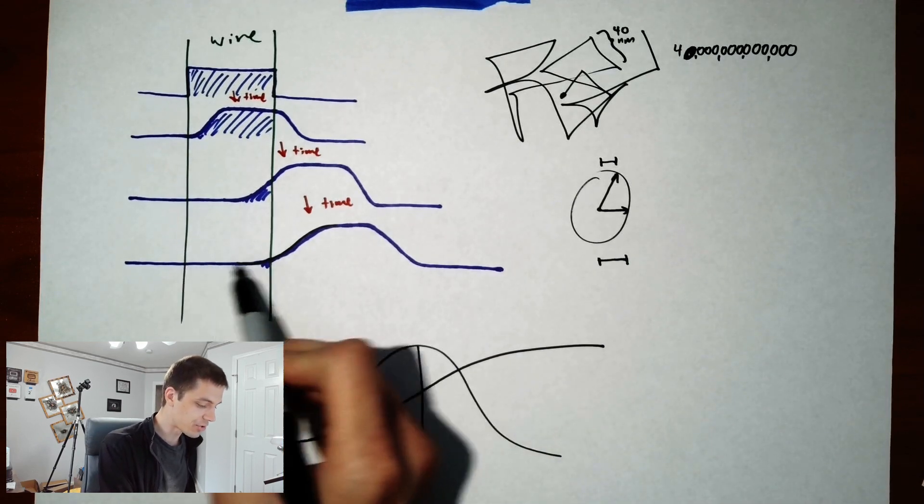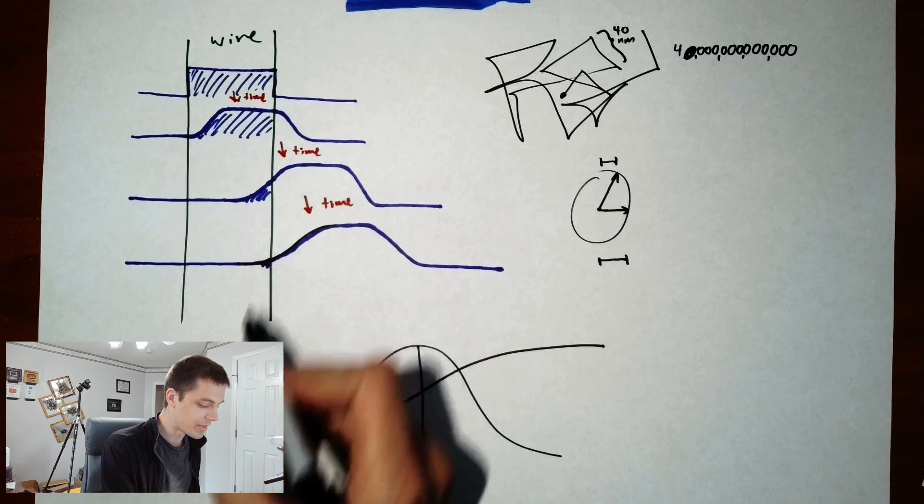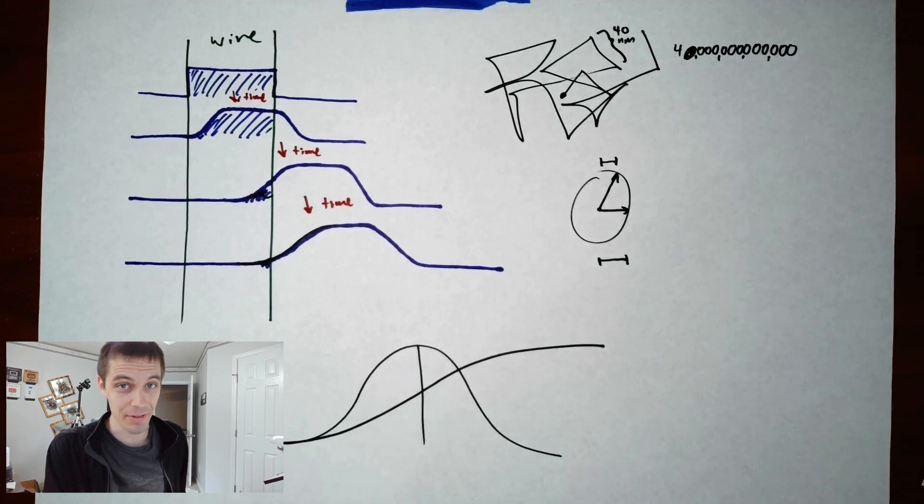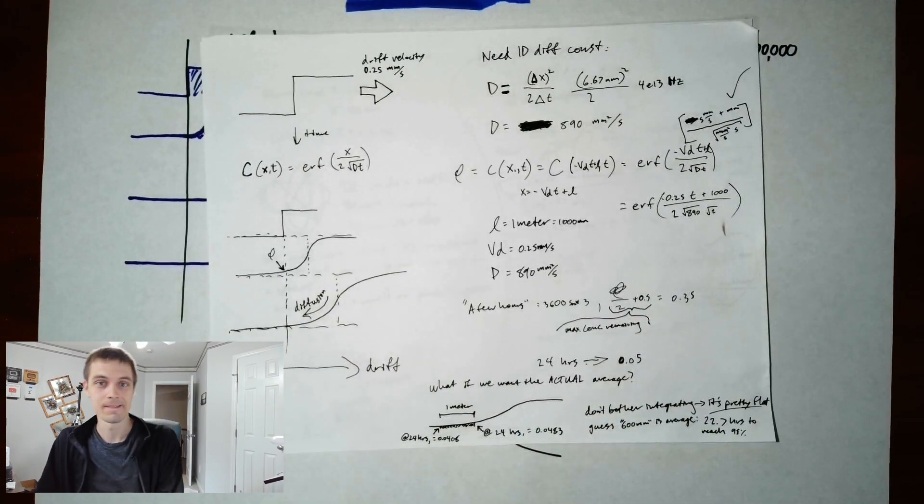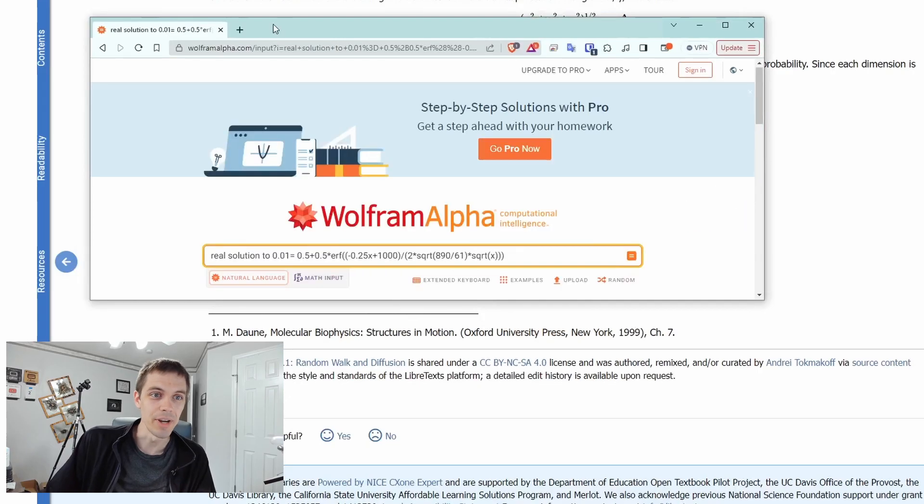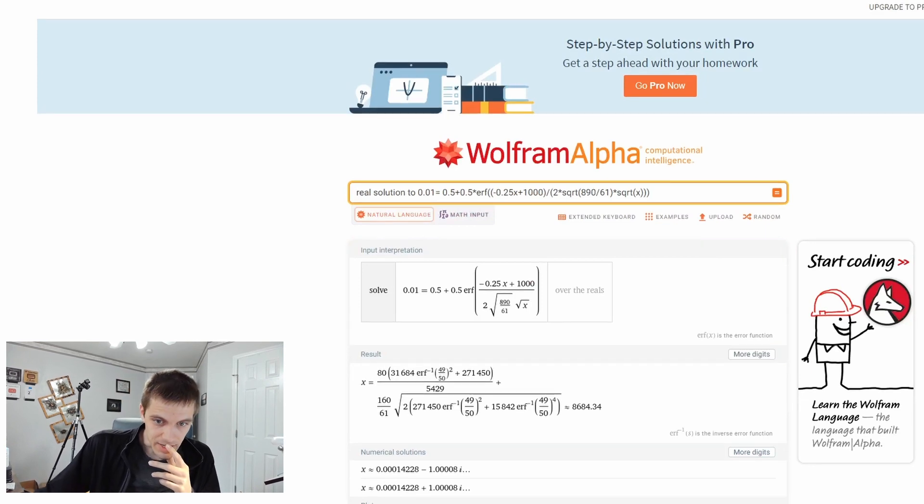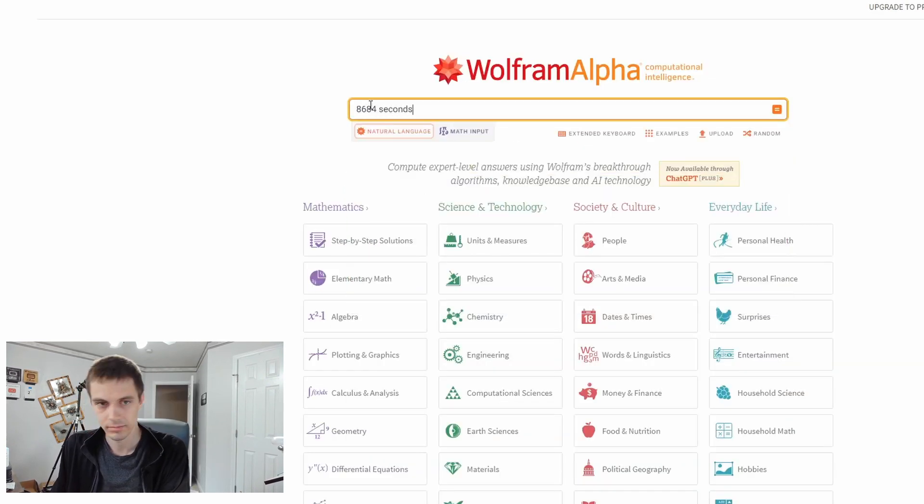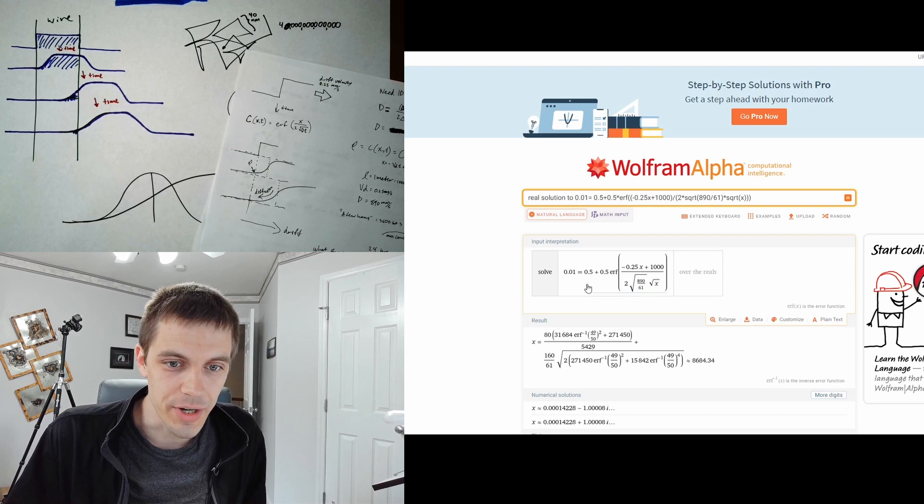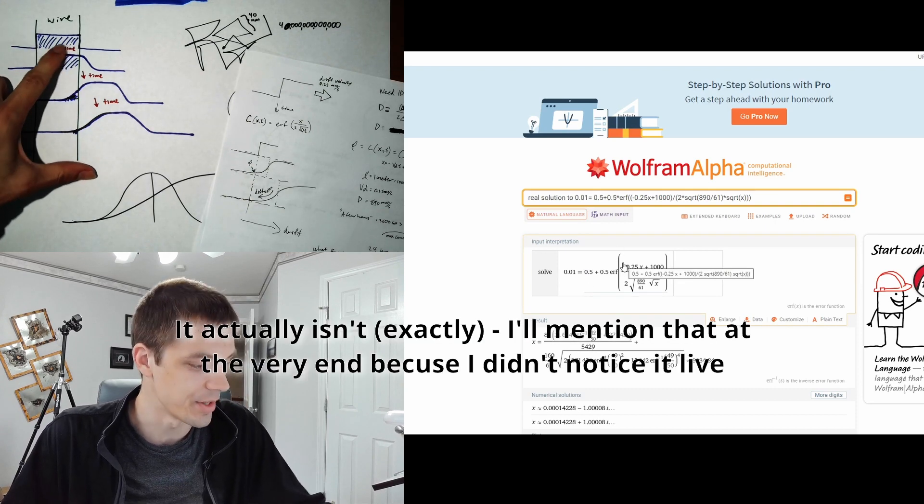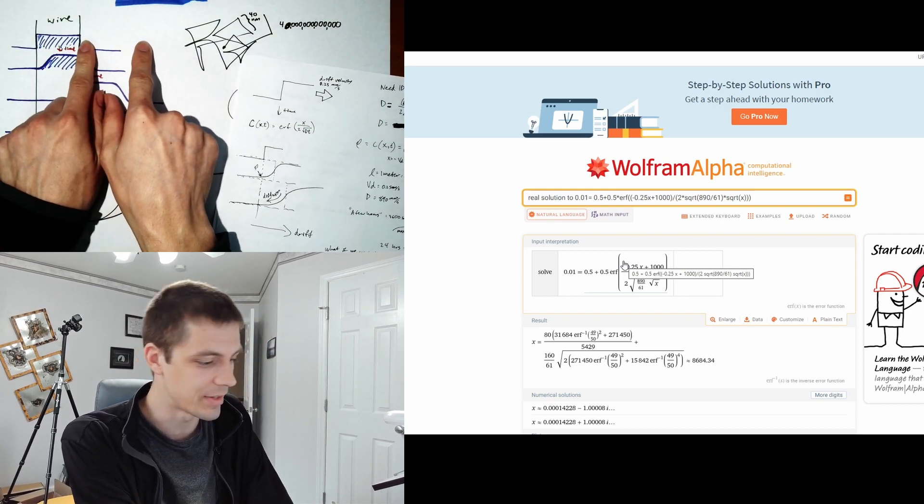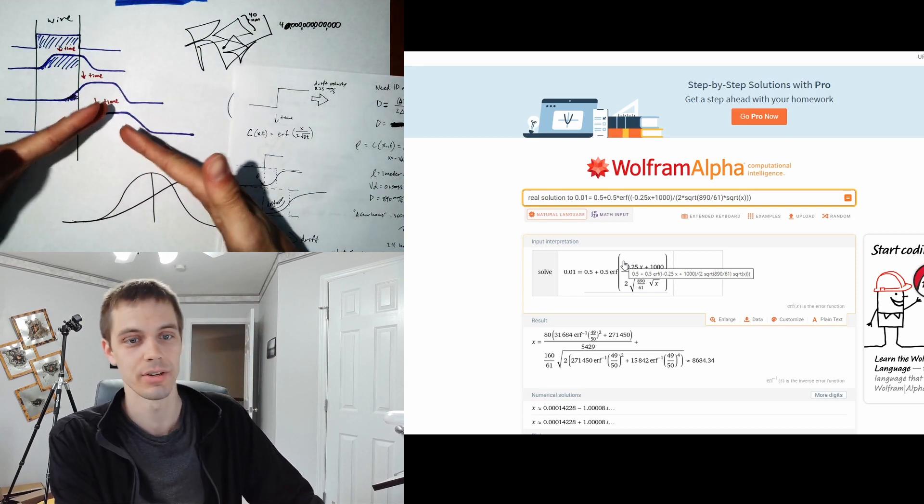This error function is the shape of this slope right here. We have a mathematical form for this, which means we can write a function that describes this blue curve and figure out what this little integral is every time. What's the snippet of electrons that are still left over? The electrons that haven't yet moved out of the wire. That's what I was doing here. I typed this into Wolfram Alpha at some point.